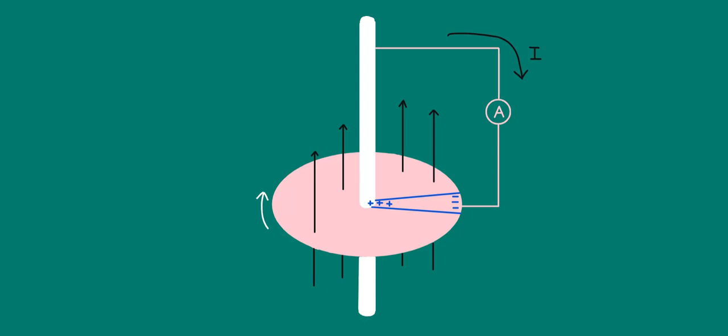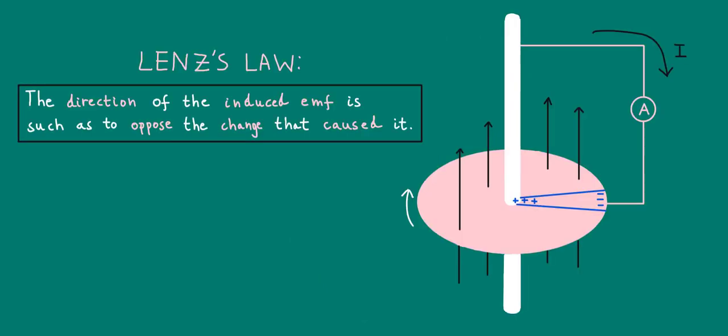Recall that Lenz's law states that the direction of the induced EMF is such as to oppose the change that caused it. We've already worked out the direction of the induced EMF and current. Within the sector, the induced current flows from right to left. From Fleming's left hand rule, we can therefore see that the sector would experience a magnetic force that resists its motion.